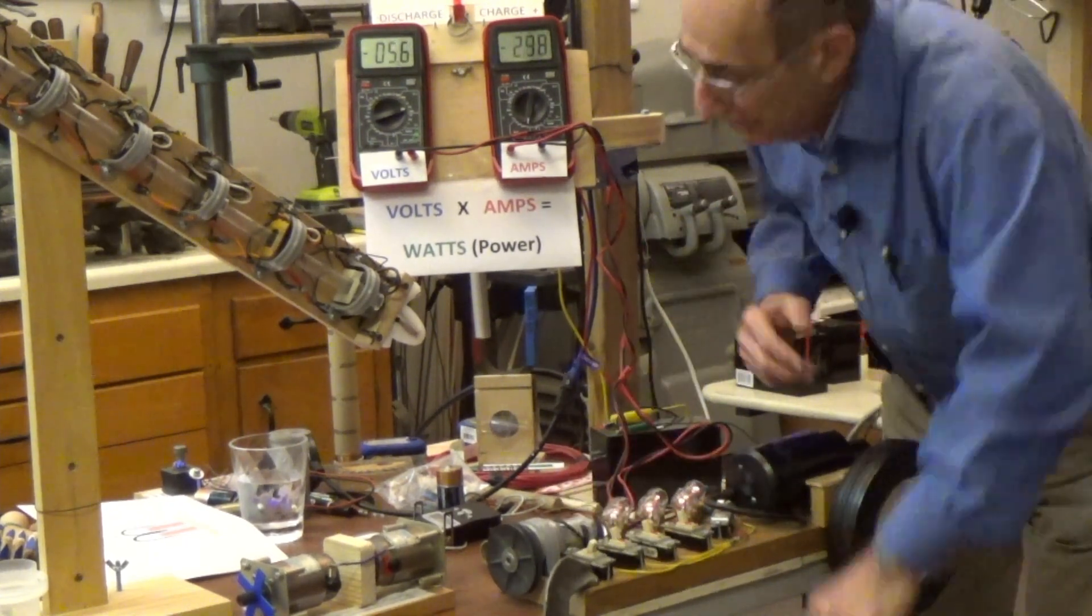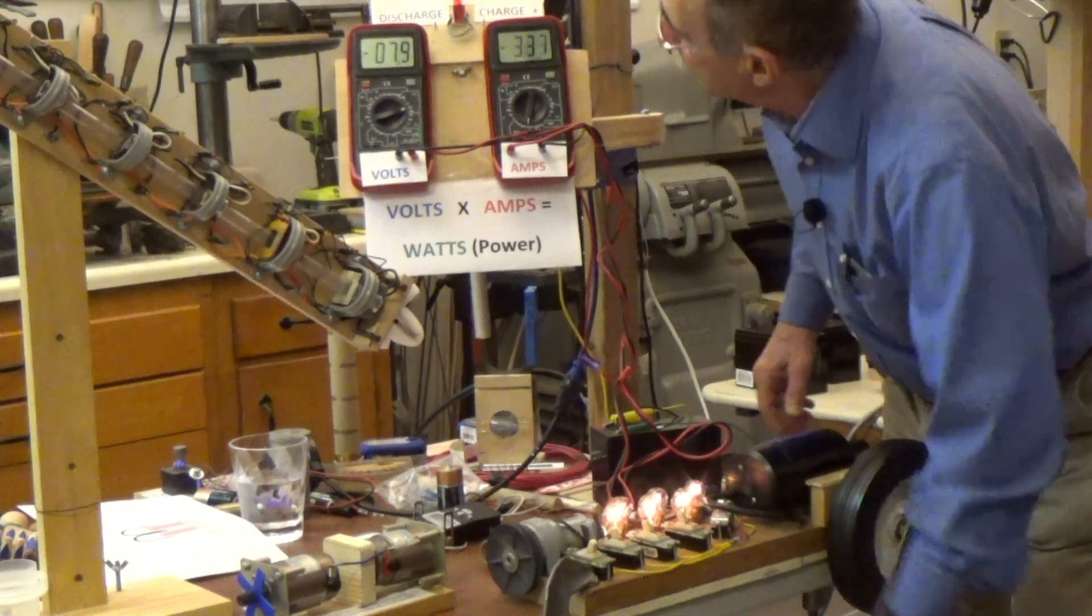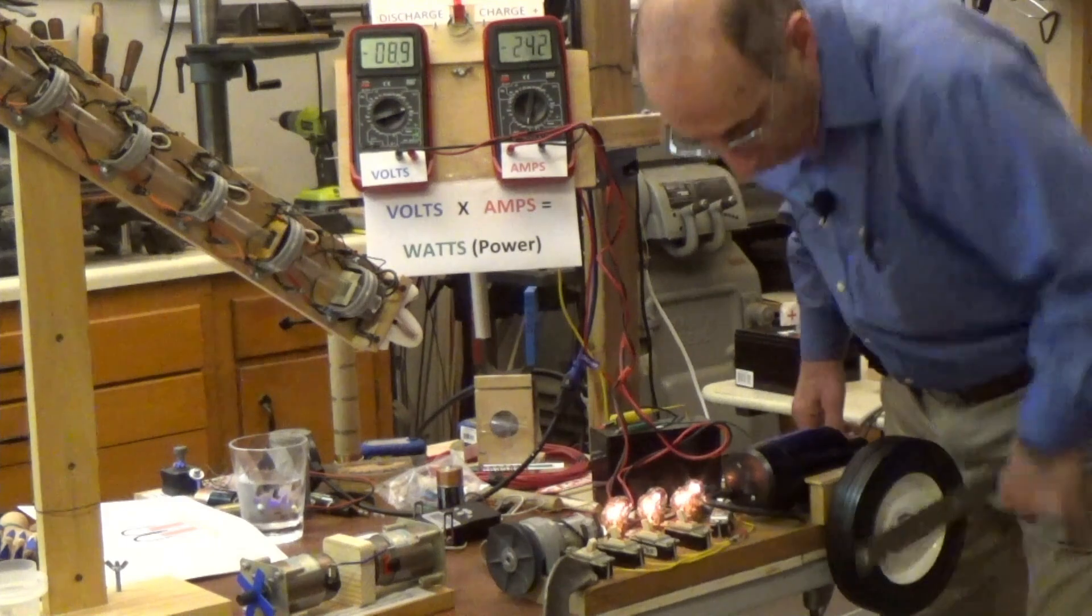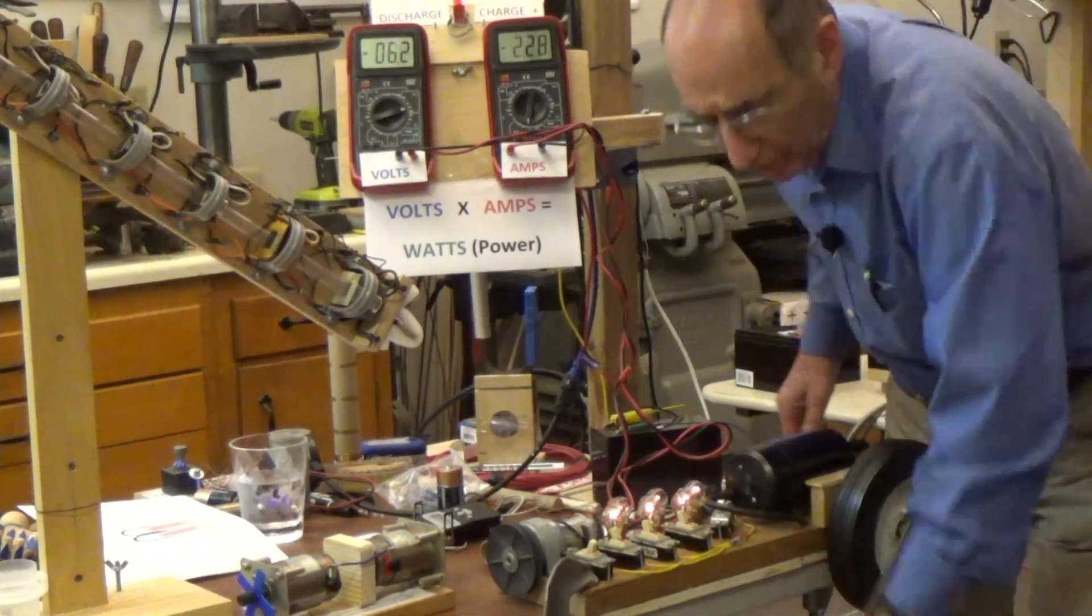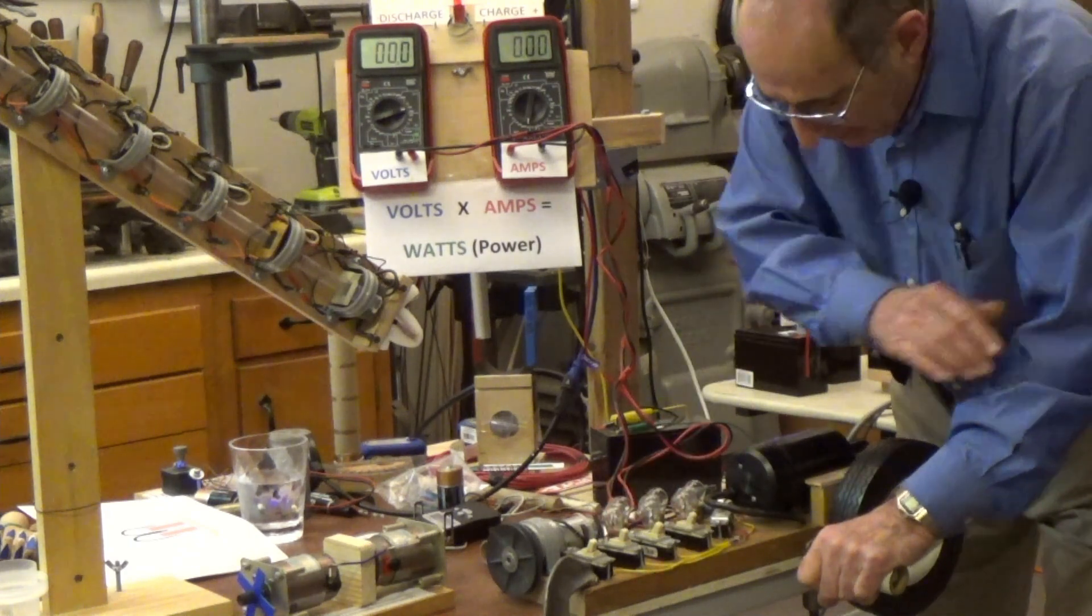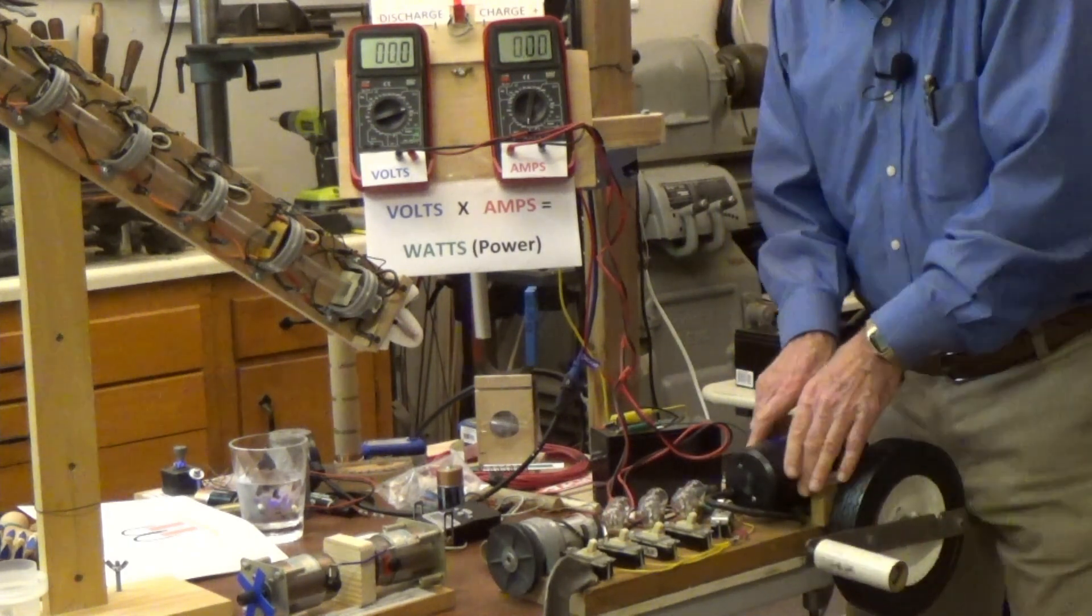Third bank, 3 amps, about 9 volts, 27 watts. This is hard work. And, that's how we generate electricity.